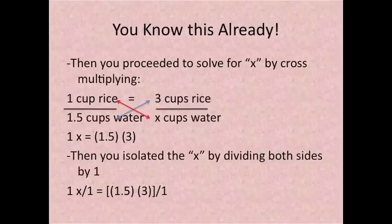Then you proceeded to solve for x by cross multiplying. So one cup of rice times x cups of water is equal to one x and you write that on the bottom where I have it already. Then 1.5 cups of water times three cups of rice is equal to 1.5 times three.